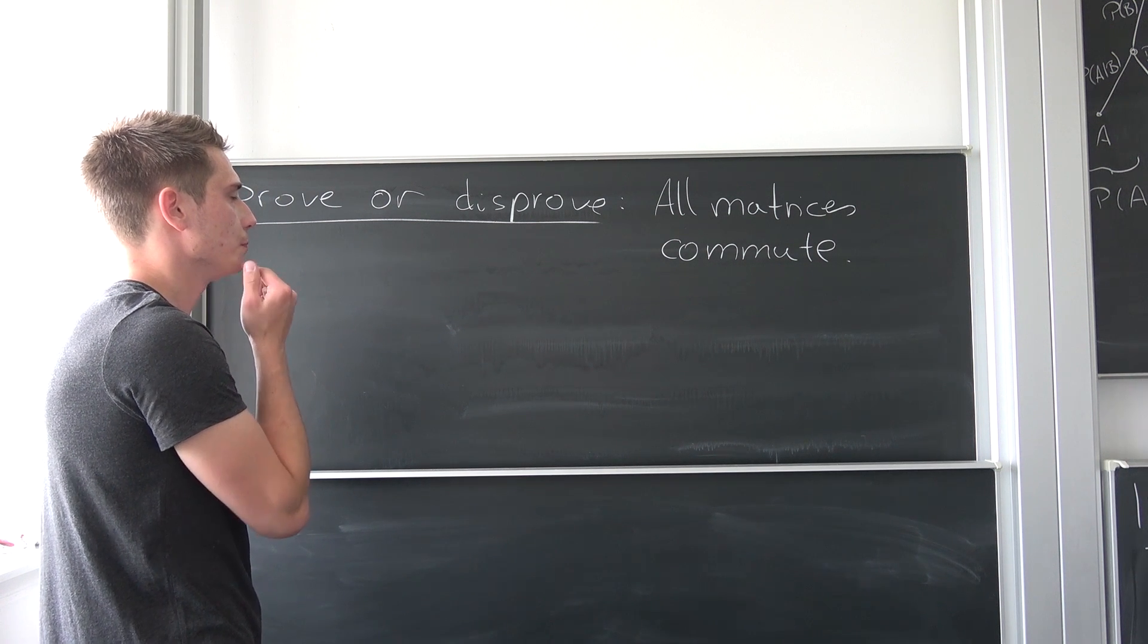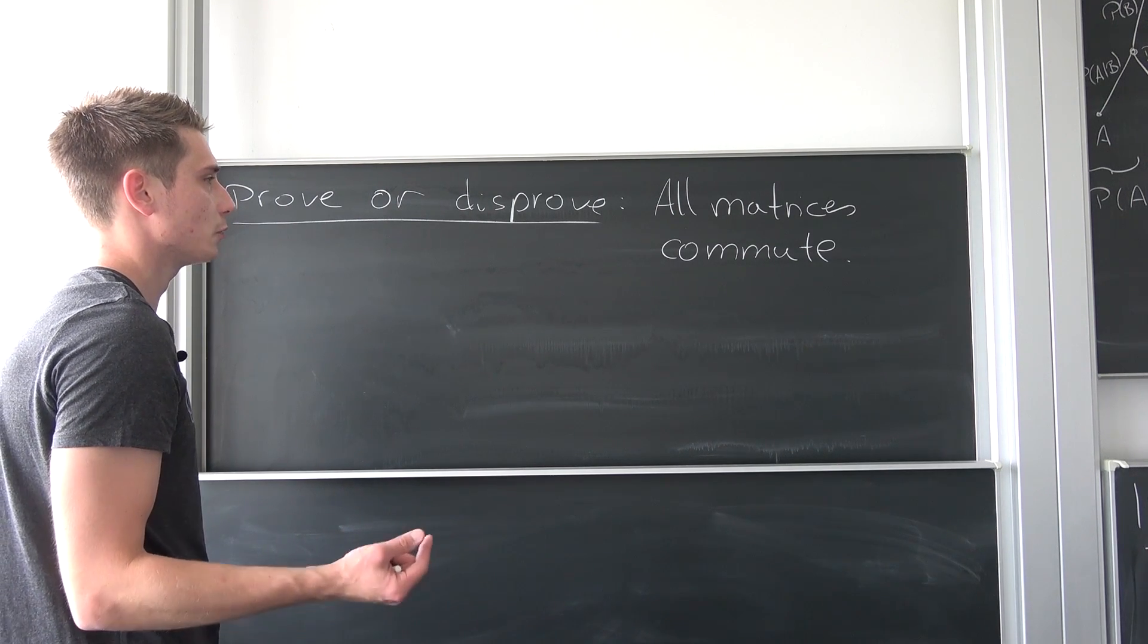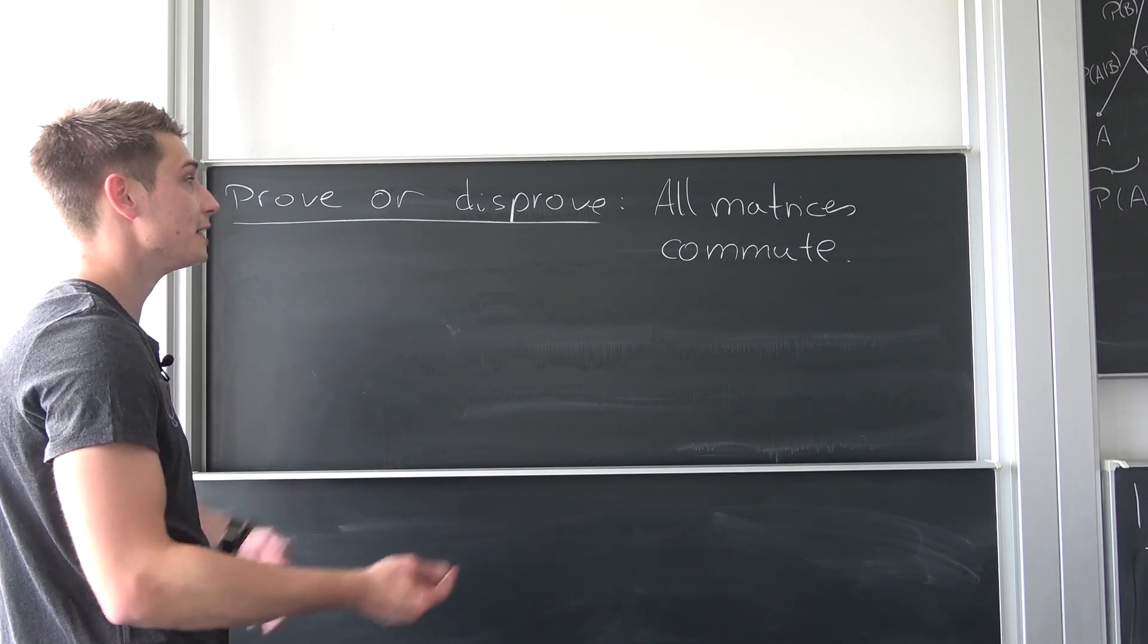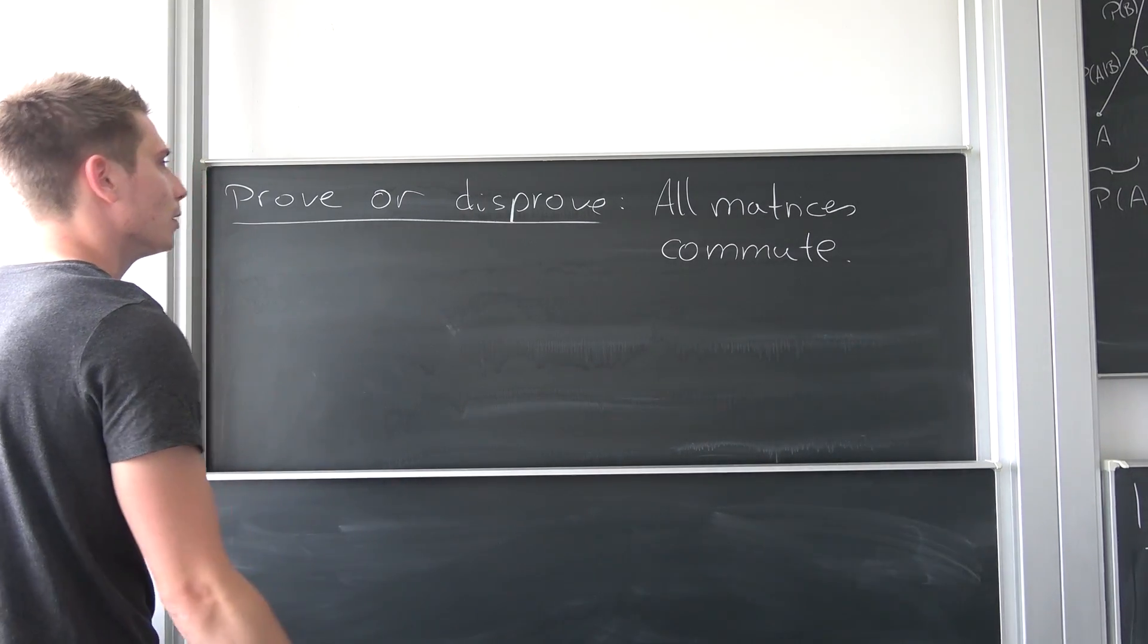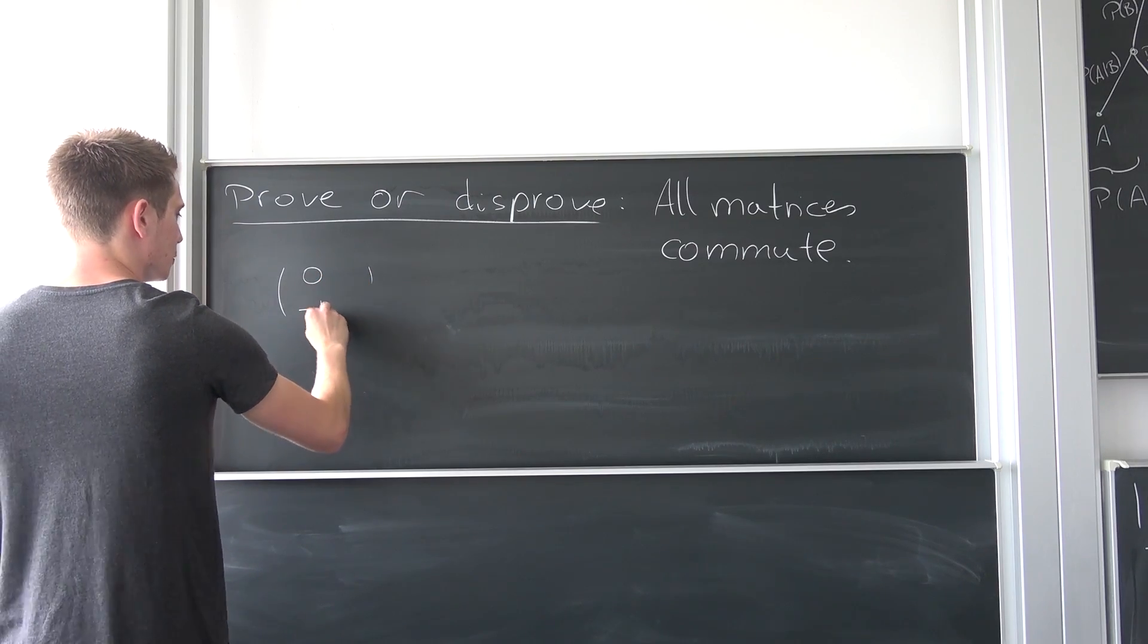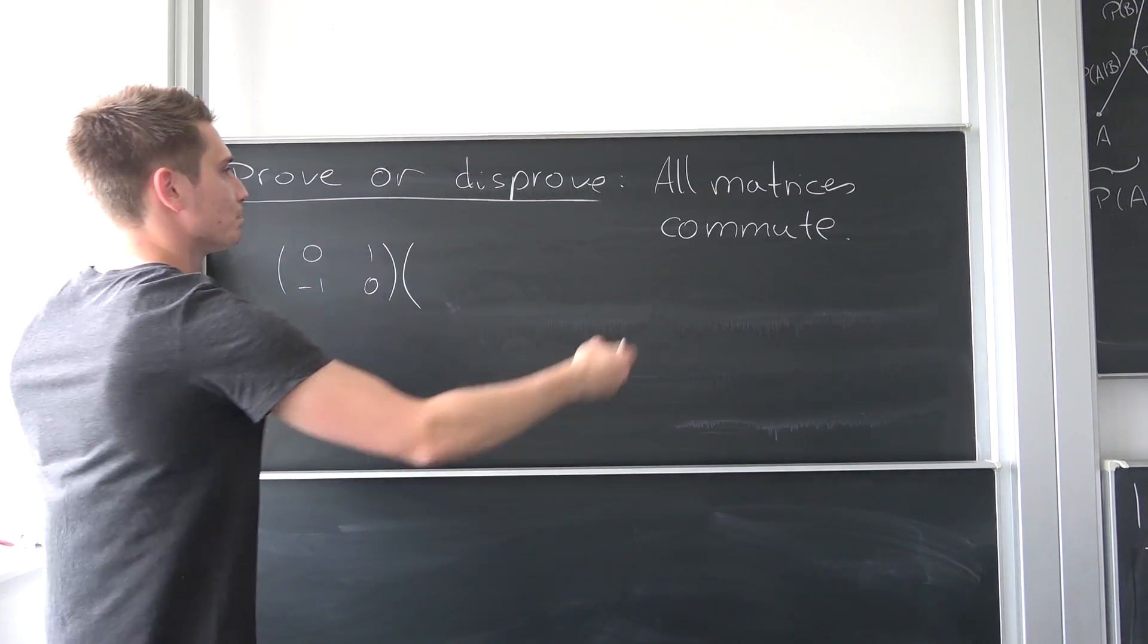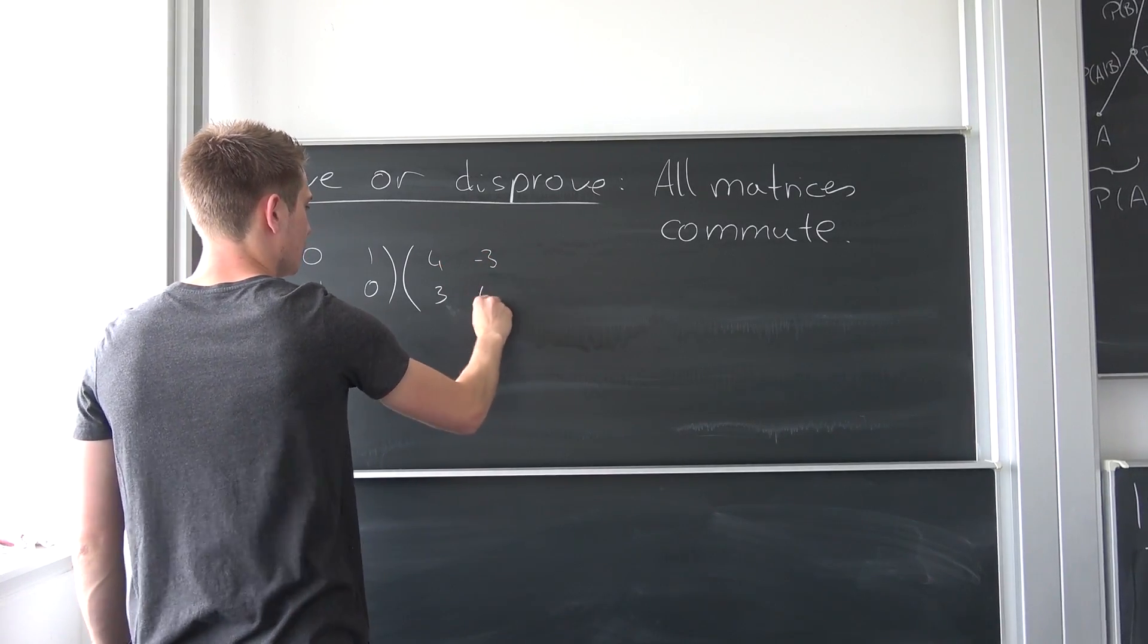Prove or disprove: All matrices commute. I mean, if I just pick two matrices randomly, then that should definitely do the trick. I mean, if it holds for one example, then it definitely holds for everything. So why not just pick completely random zero, one, negative one and zero, and we are going to multiply it by, I don't know, four, negative three, three and four.